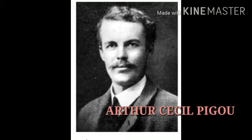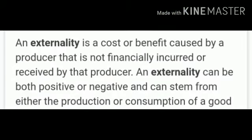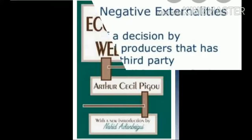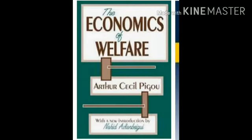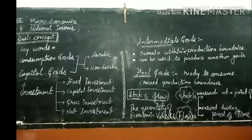Arthur Cecil Pigou was a British economist and he was a builder of the School of Economics at the University of Cambridge. He gave the Pigou effect and the concept of externalities in economics. His most influential work was the authoring of the book Economics of Welfare in 1920. Pigou regarded economic welfare and national income as essentially coordinated.